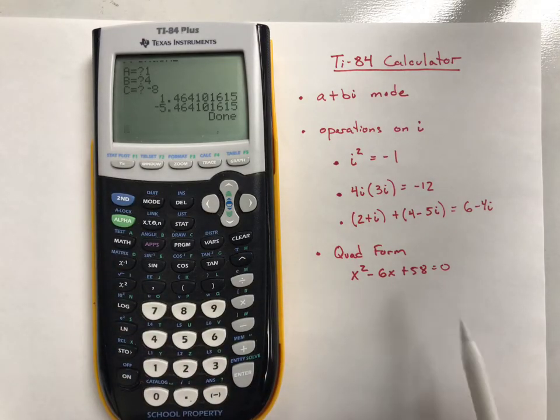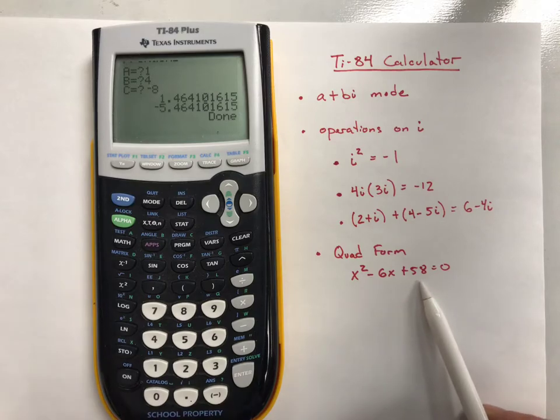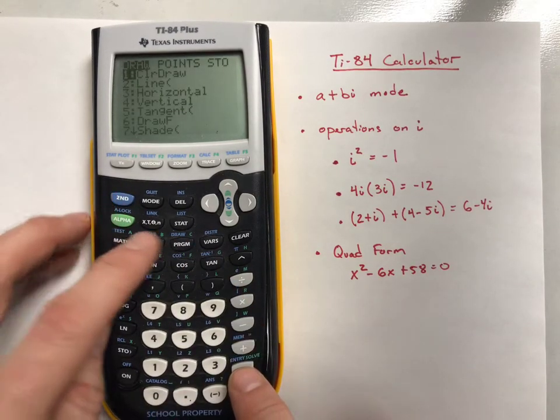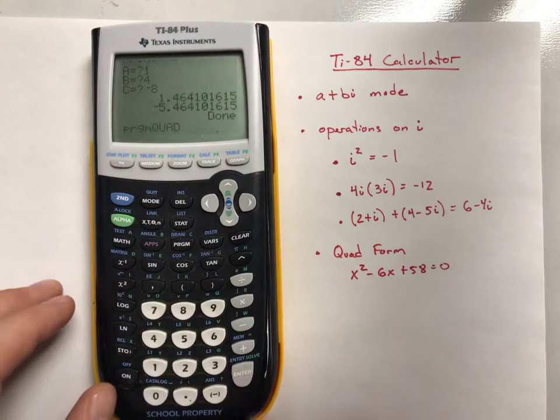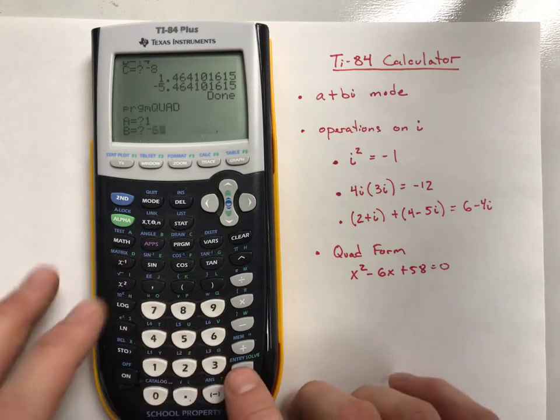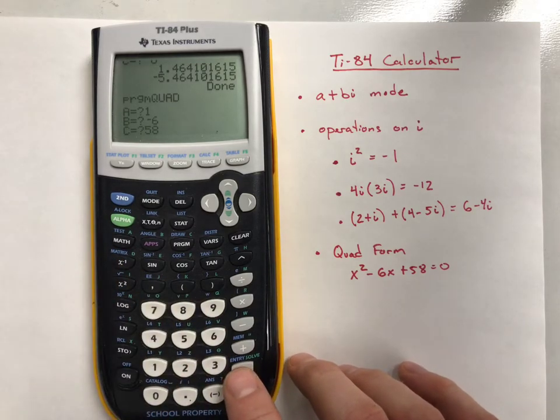However, if I wanted to do the quadratic formula here of x squared minus 6x plus 58 to find those roots, I could go into my program again and choose your quadratic formula. You hit 1, then negative 6, and 58 for your A, B, and C.